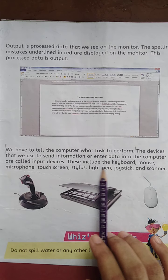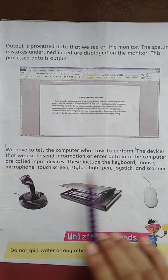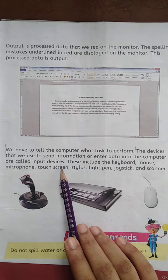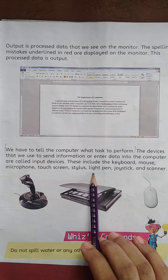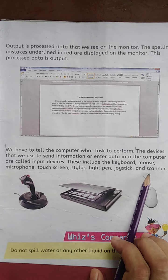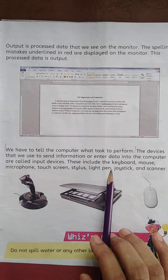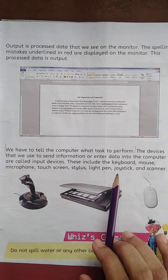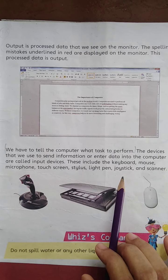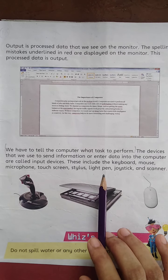Input devices include the keyboard, mouse, microphone, touch screen, stylus, light pen, joystick, and scanner. These are the parts of the computer that we use to give data to it. When we give data and it gets processed, the result is output.